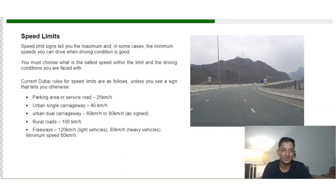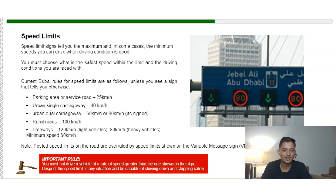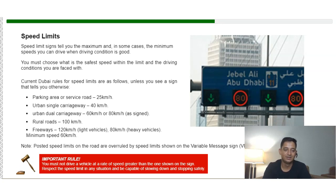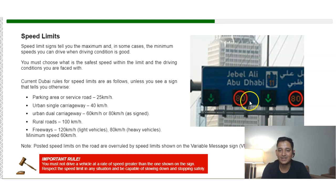Current Dubai speed limits are as follows: 25 km/h in parking areas; 40 km/h on urban single carriageways; 60 or 80 km/h on urban dual carriageways as per signage; 100 km/h on rural roads; 120 km/h on freeways for light vehicles and 80 km/h for heavy vehicles. The minimum speed on a freeway is 60 km/h. Posted speed limit signs on the road override all other signs — if a sign shows 80 km/h, you must maintain that speed even if the road sign shows 120.